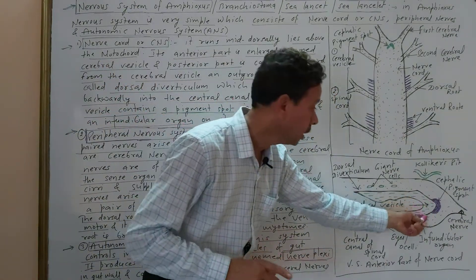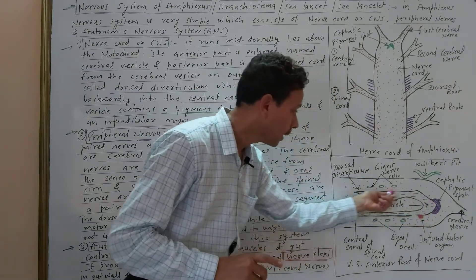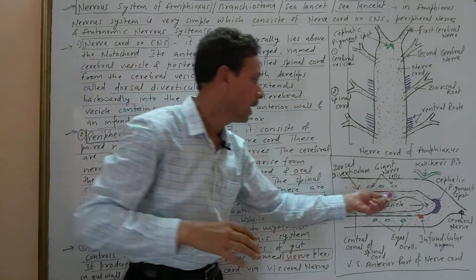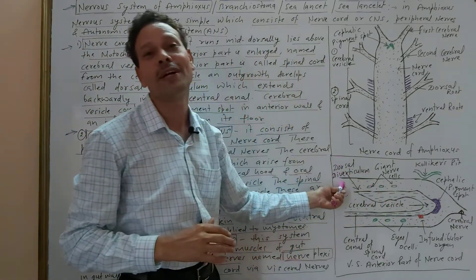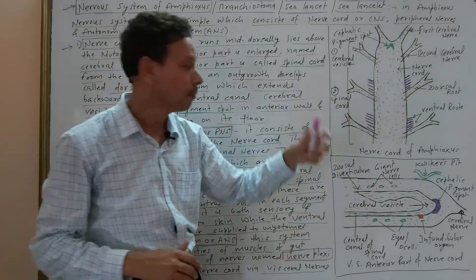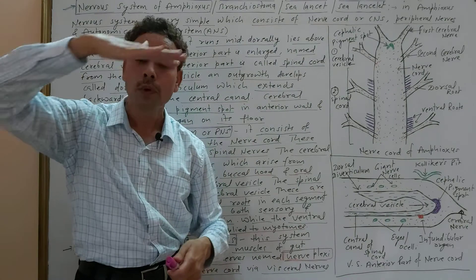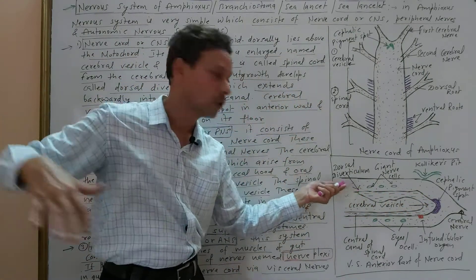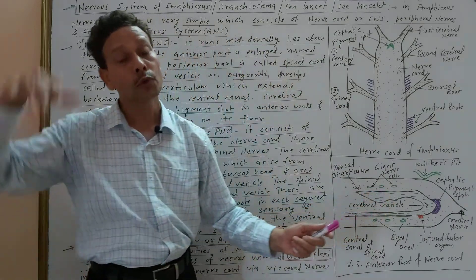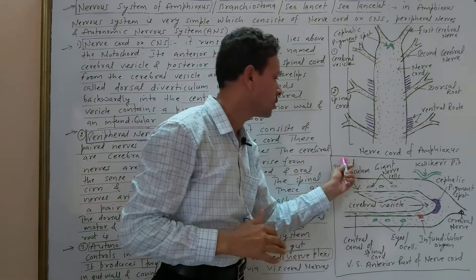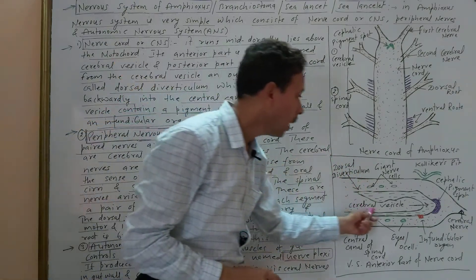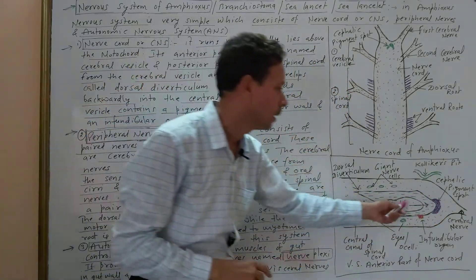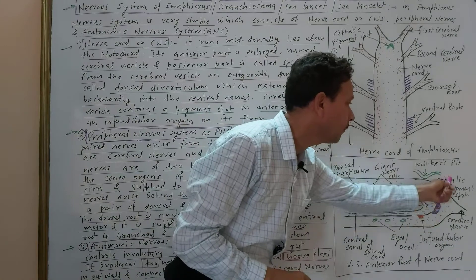An important point for exams: from the cerebral vesicle, there is an outgrowth — a dorsal projection extending backwardly. This outgrowth is called the dorsal diverticulum. Additionally, at the anterior-most part of the cerebral vesicle, there is a pigment spot called the cephalic pigment spot, which is a sensory organ.